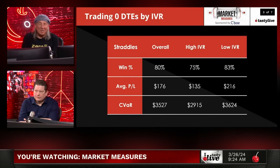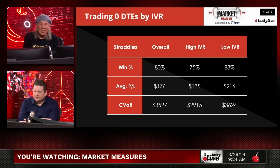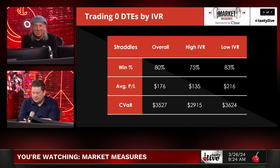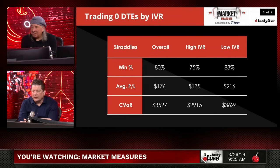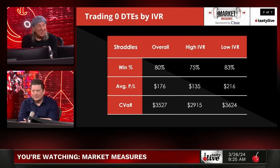Volatility contracted and there have been virtually no outlier intraday moves. The win rate for straddles has been in the 80s overall — high or low IVR doesn't matter much. The PnLs have been extremely positive. Low IVR was even better, which is interesting. The critical point: high IVR rank had a lower average PnL compared to low IVR rank at $216. So low IVR outperformed high IVR on straddles.